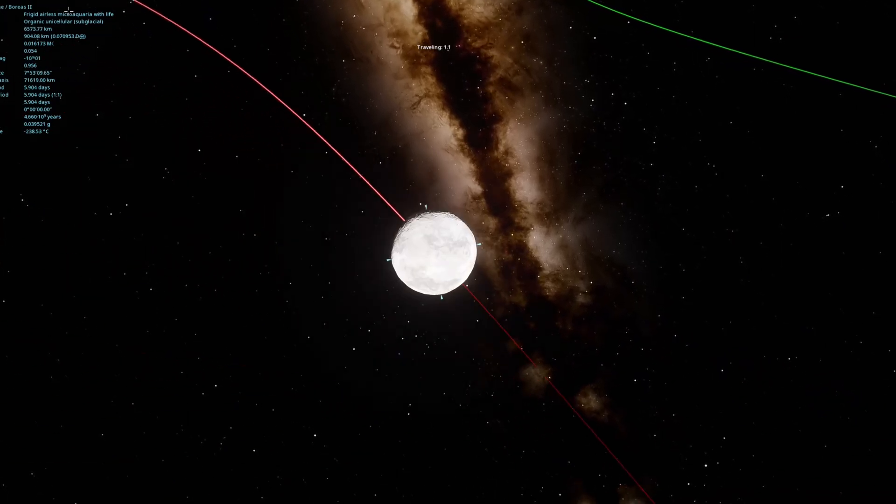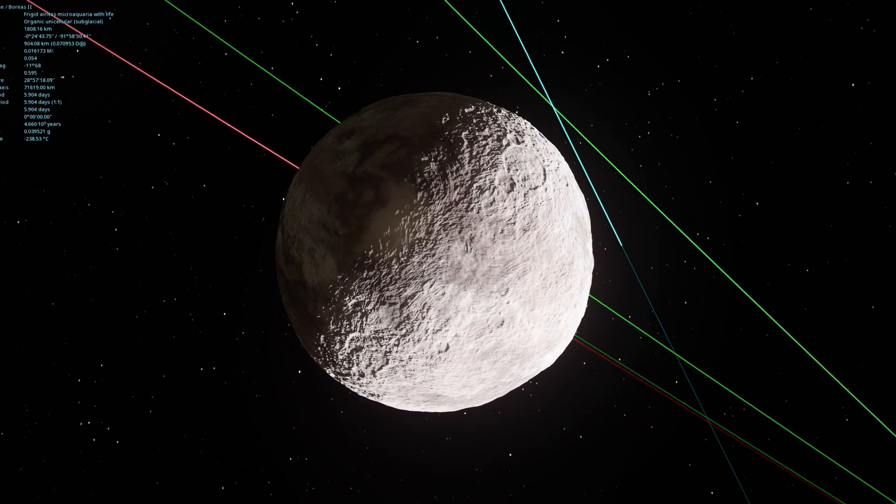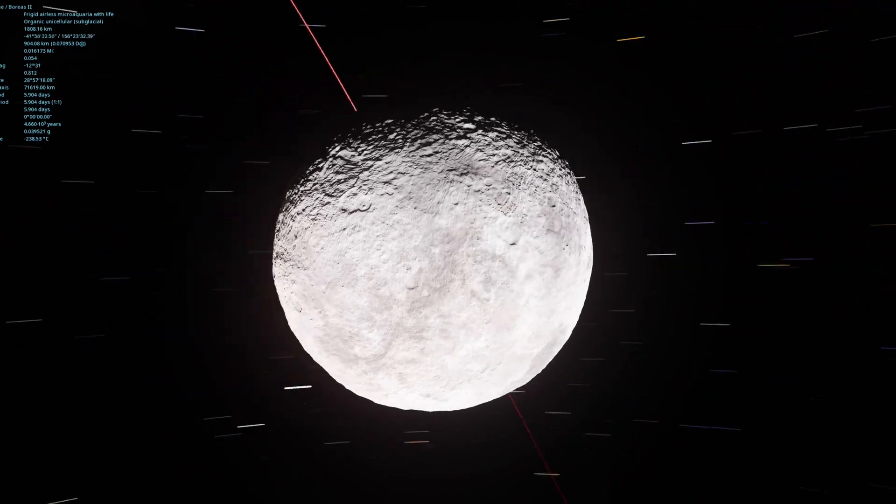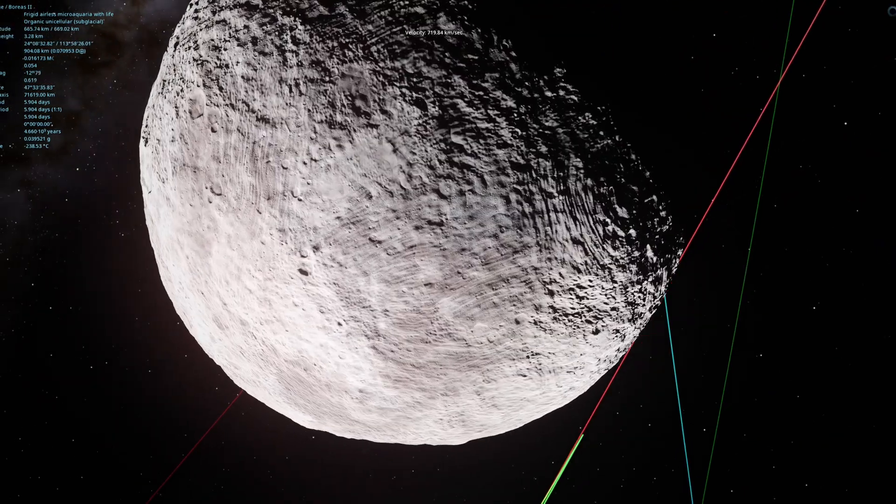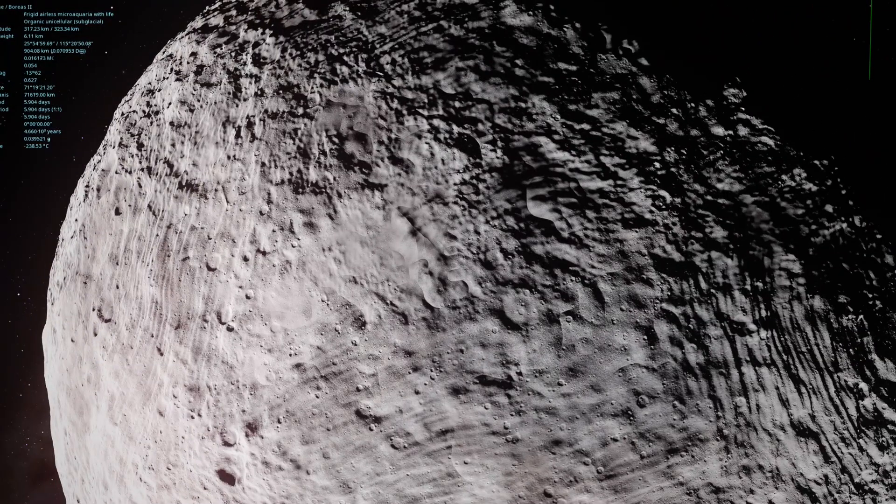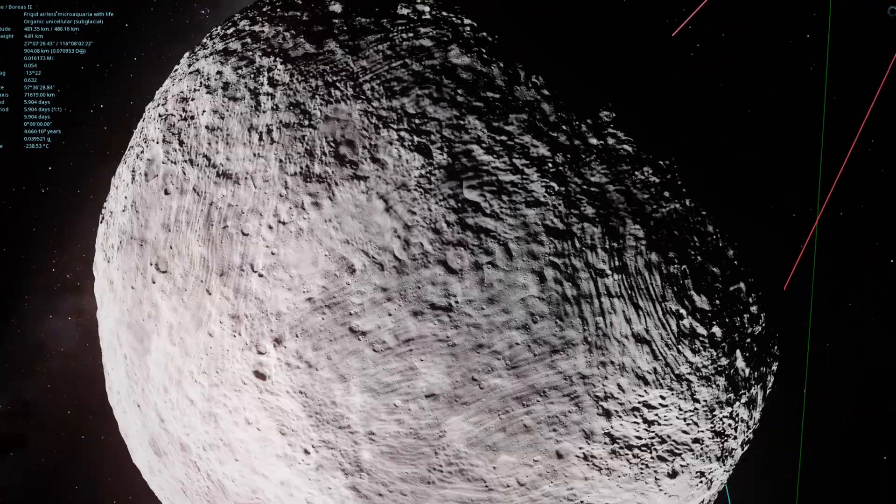Frigid, airless moon with life. We have subglacial life on this moon, meaning that the life would be inside the glaciers. Very interesting formations here, it almost looks like brushstrokes on the surface.